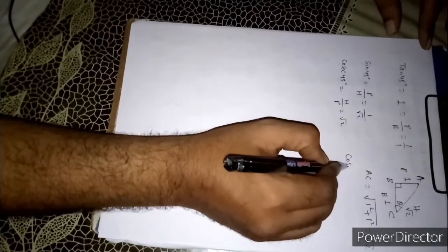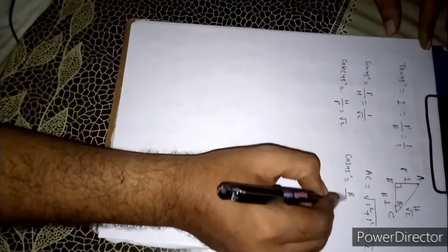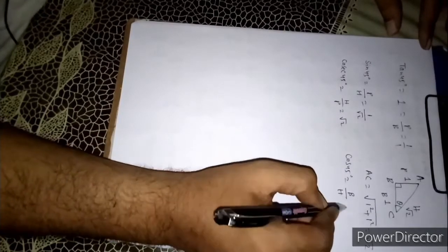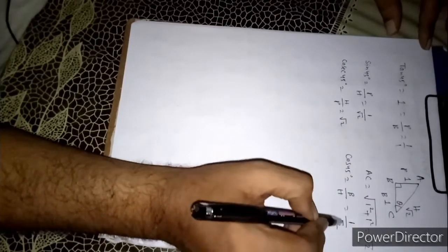If I want to know cos 45, cos theta is B by H, curly brown here. What is base? Base is 1. Hypotenuse is what? Root over 2.